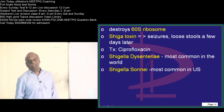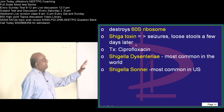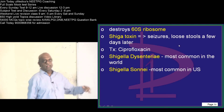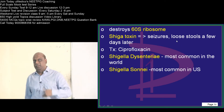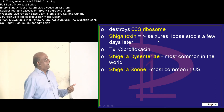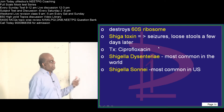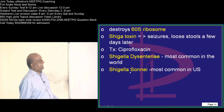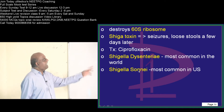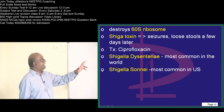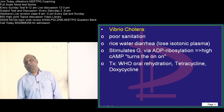Now comes the Shiga toxin. Shiga toxin is responsible for a very fulminant course with seizures, loose stools, etc. Shigella sonnei is found in America; Shigella dysenteriae is most common worldwide.